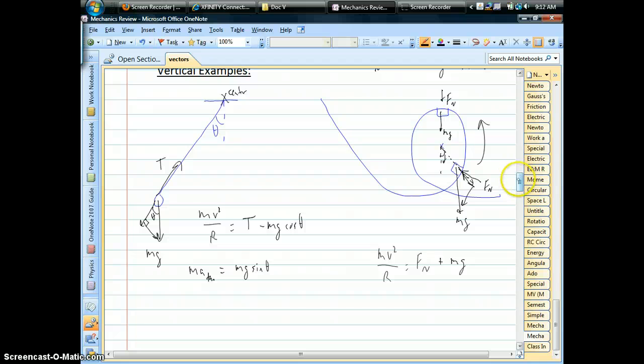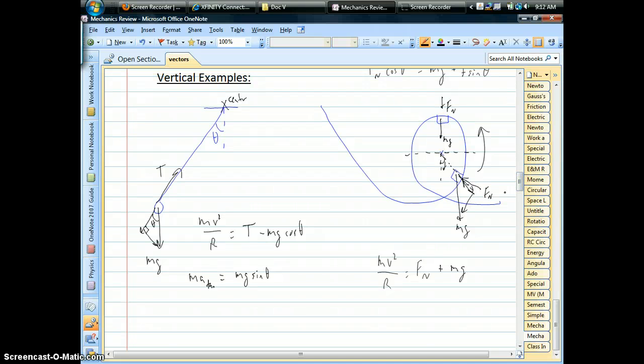So here it's kind of weird because if you're on the top half, gravity is adding. It's the centripetal force. If you're on the bottom half, gravity is pointing away from the center and it acts as a type of centrifugal force. So you have to be careful and understand where you are on that path as you go around.